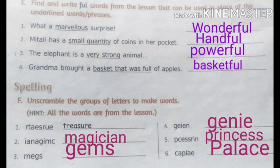The next question is 'The elephant is a very strong animal.' The underlined word is very strong. In the place of very strong we can write powerful. The next question is 'Grandma brought a basket that was full of apples.' The underlined word is basket that was full of. In the place of that we can write basketful.